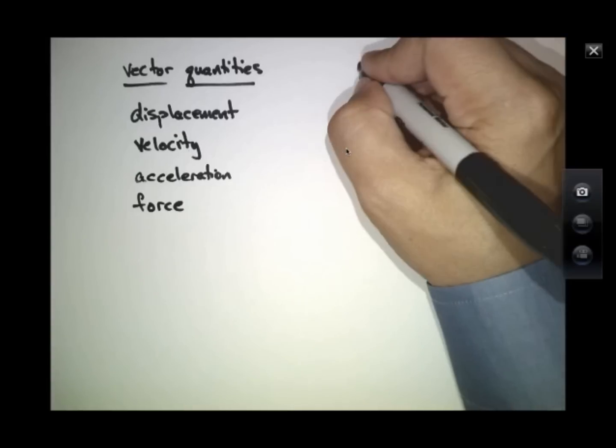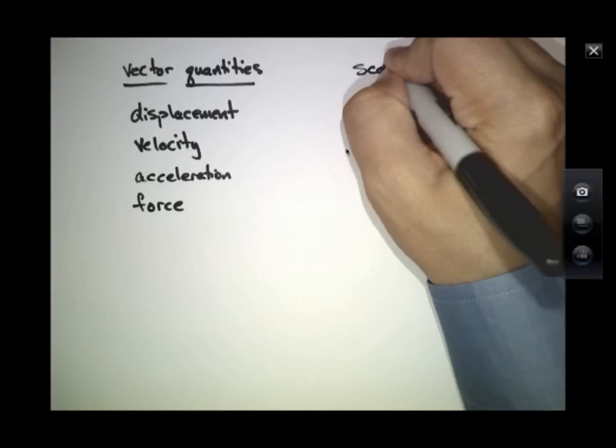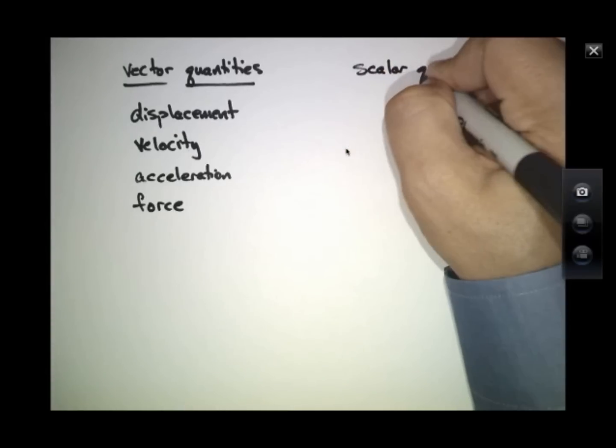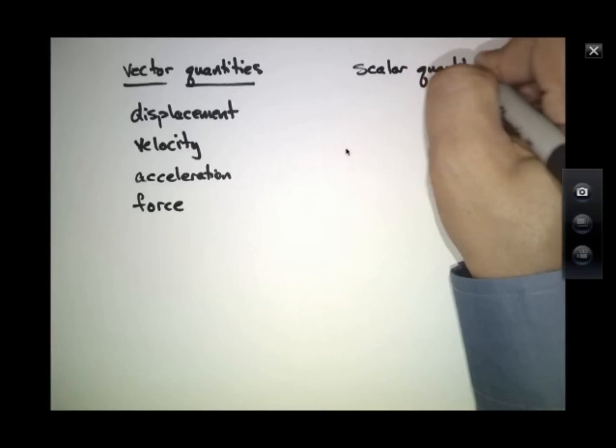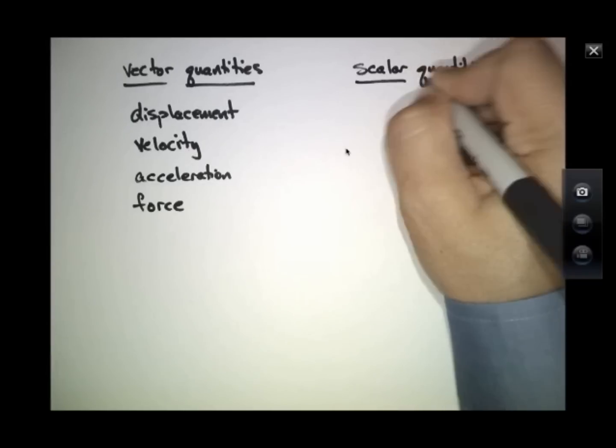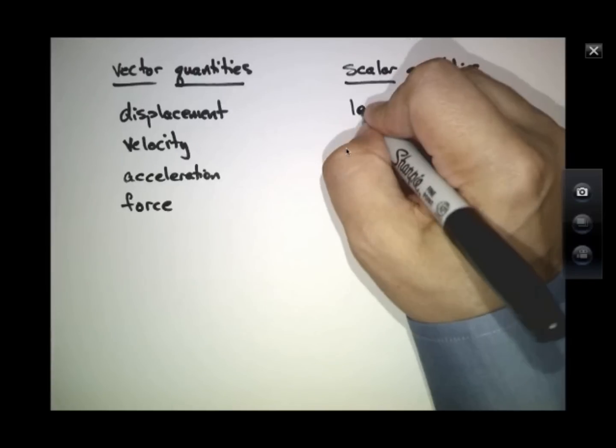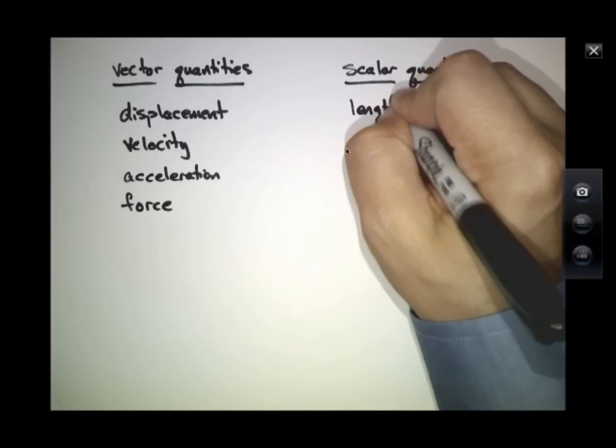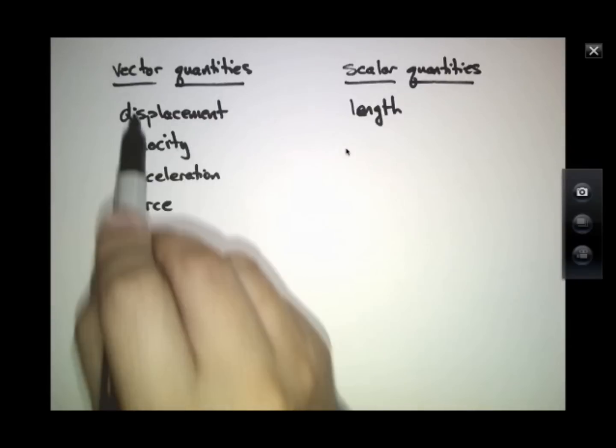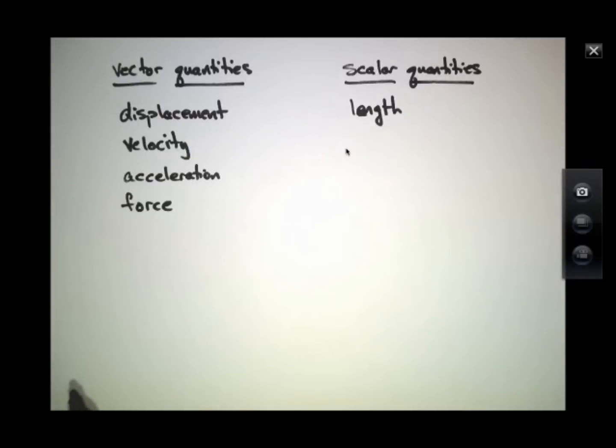There are other things that are scalar quantities. Scalar quantities are just a number. There's no direction applied. And for everything over here that is an example of a vector, there's a corresponding scalar quantity.